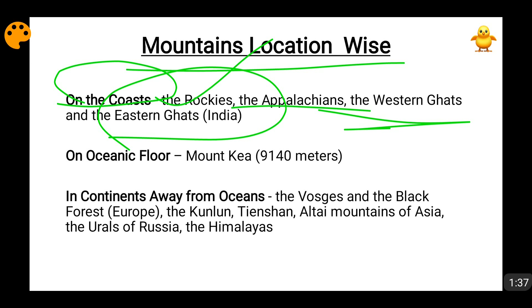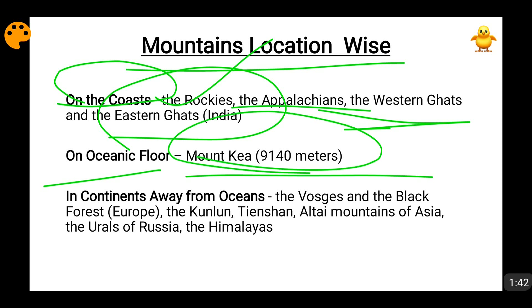Then on the oceanic floor, there is a mountain named Mount Kia. This Mount Kia rises from the oceanic floor and comes above the surface of the ocean. The total height is 9,140 meters and if you compare it with Mount Everest, it is even taller — Mount Everest is around 8,800-something meters. But since it rises from the ocean basin, on land the largest mountain is considered Mount Everest. In reality, it is Mount Kia because it is 9,140 meters.